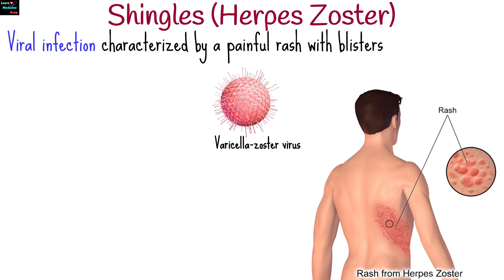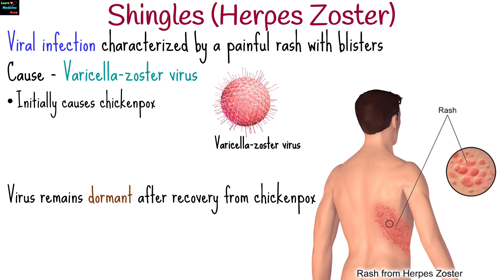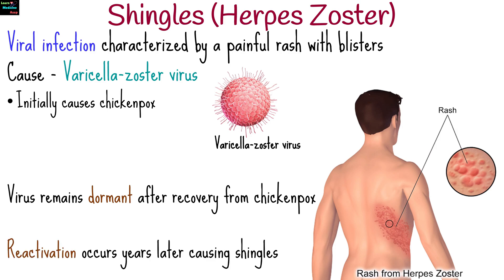Shingles, medically known as herpes zoster, is a viral infection characterized by a painful rash with blisters. It is caused by the varicella zoster virus, which also causes chickenpox. After a person recovers from chickenpox, the virus remains dormant in the nerve tissues near the spinal cord and brain. Years later, the virus can reactivate, leading to shingles.